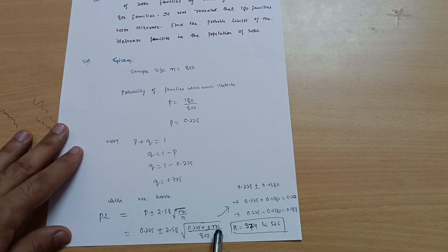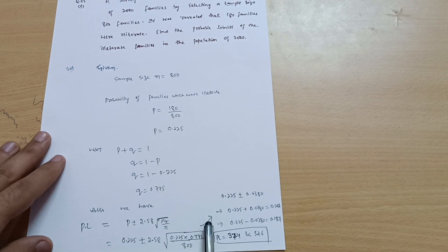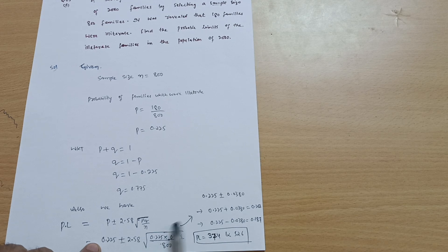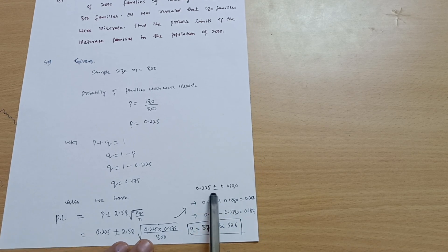When you calculate this much you will get 0.225 plus minus this value. When you calculate you will get 0.0380. Now you have to take positive value and negative value.